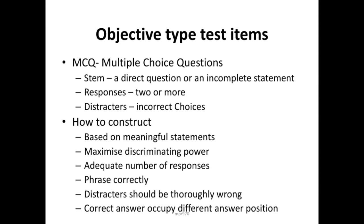The distractors given in the options should be thoroughly wrong — not partially correct in any manner. Correct answers should occupy different answer positions. If there are ten MCQ items in a test paper, the distribution of correct answers across positions A, B, C, D, or E should be equal and not easily guessable.